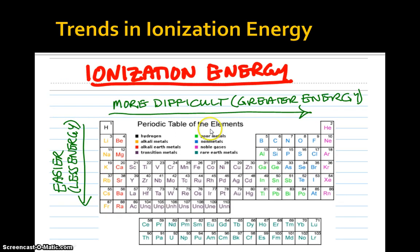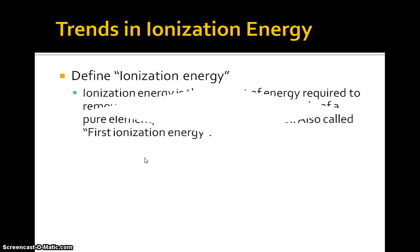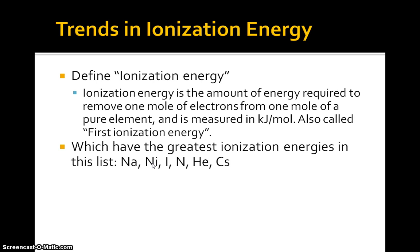Ionization energy is the ability to remove an electron from a neutral atom. It gets more difficult as you go across a row, but easier as you go down a family or column. Ionization energy is defined as the amount of energy required to remove one mole of electrons from one mole of a pure element, measured in kilojoules per mole — also called first ionization energy. Of sodium, nickel, iodine, nitrogen, helium, and cesium, the greatest ionization energy belongs to helium.